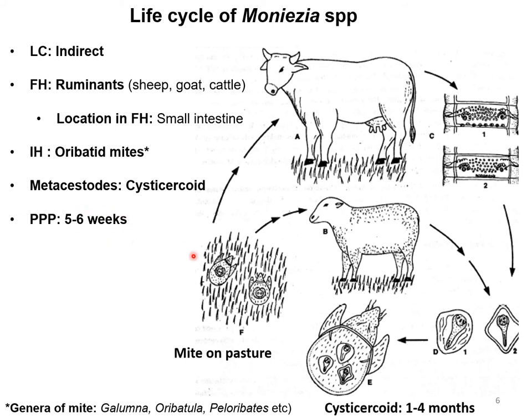The time required for completion of this life cycle is five to six weeks — from ingestion on the grazing land where mites on the pasture possess cysticercoids in their body. After ingestion, the cysticercoid is released in the intestine, followed by development of a mature parasite that starts producing gravid proglottids as well as causing clinical signs.